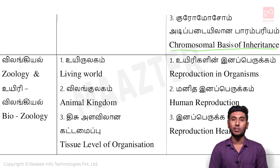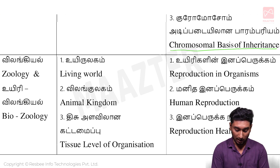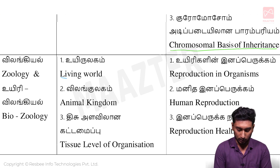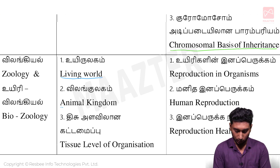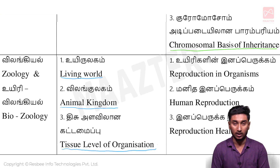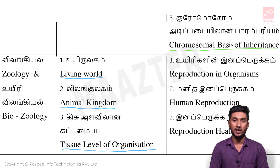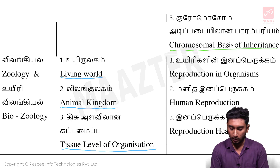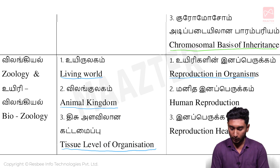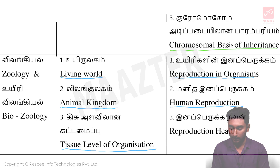Next, Zoology. For 11th standard students: Unit 1: Living World. Unit 2: Animal Kingdom. And Unit 3: Tissue Level of Organization. For 12th standard students: Unit 1: Reproduction in Organism. Unit 2: Human Reproduction. And Unit 3: Reproduction Health.